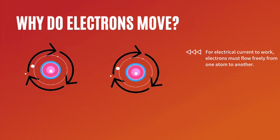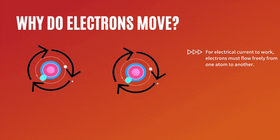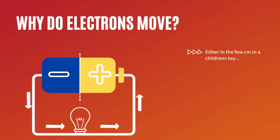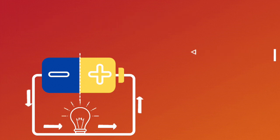For electrical current to work, electrons must flow freely from one atom to another. In a circuit, the wiring between the point of negative charge and positive charge allows the free flow of electrons, either in a few centimeters in a child's toy, or over hundreds of kilometers in power lines.